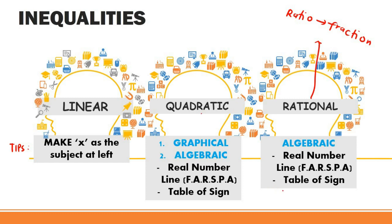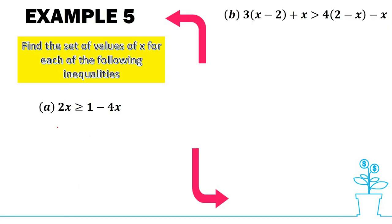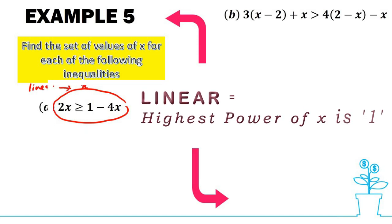There is only one method to solve rational inequalities, with sub-steps of real number line by FARSPA and you could opt for table of signs as well. This is your task: please find out the properties of inequalities. Here is our first example. We have 2x greater than or equal to 1 minus 4x. Something to ponder: which category does this inequality fall into? It is actually linear because x only has the highest power of one.